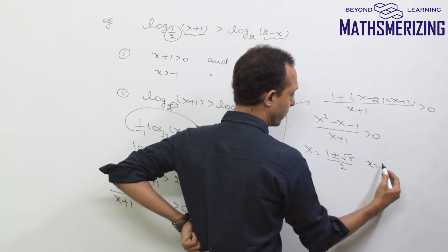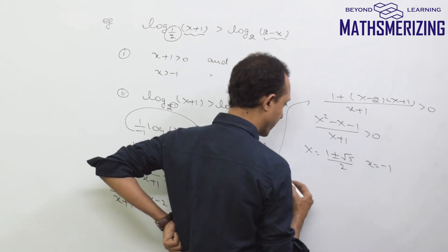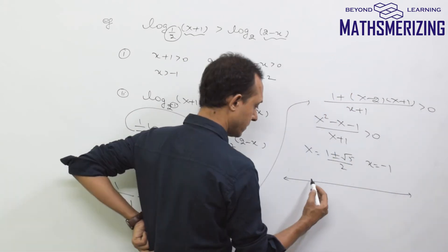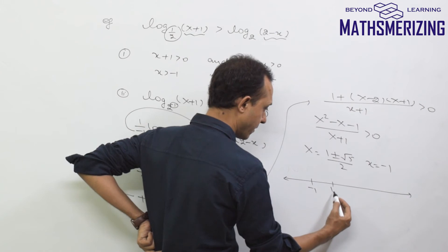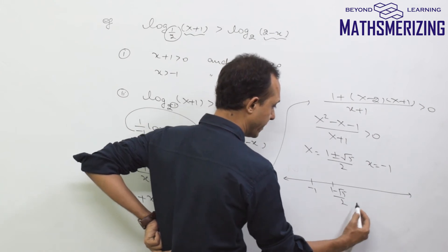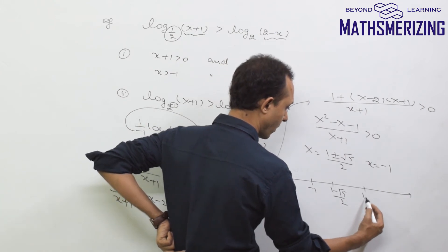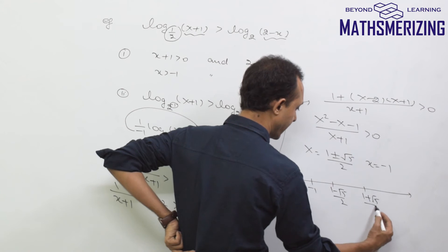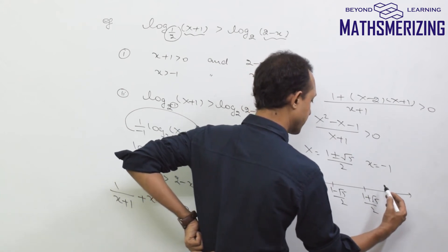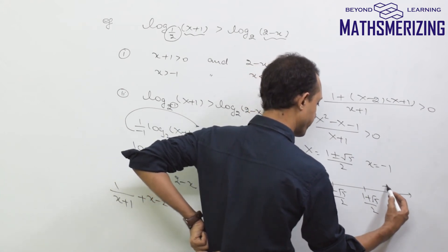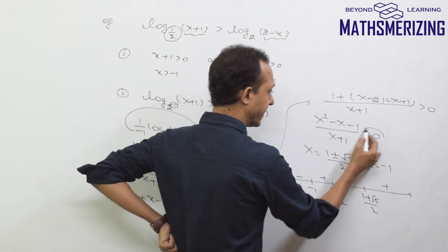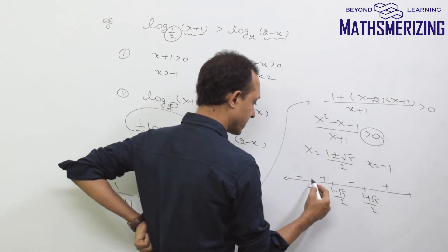The roots of the numerator are (1 plus or minus root 5) divided by 2, and the denominator gives x equal to minus 1. Placing these on a number line: minus 1, then (1 minus root 5)/2, then (1 plus root 5)/2. Using the sign chart, rightmost is positive, then alternating: plus, minus, plus, minus. I need greater than 0, so I take the positive regions.